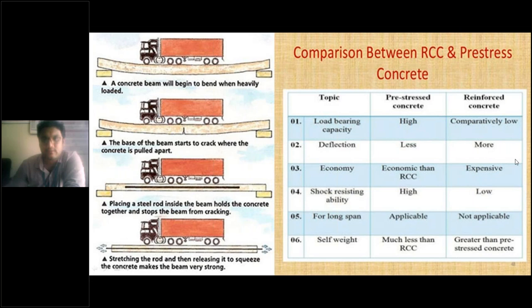The third parameter is economy. Prestressed concrete is more economical than RCC, and reinforced concrete is relatively expensive. In RCC your beam needs heavy reinforcement to take care of tensile stresses. But in prestressed concrete, there is no heavy reinforcement — only skin reinforcement to maintain the shape such as rectangular, I-section, or T-section. Apart from that, there is no reinforcement to resist tensile stresses in PSC.